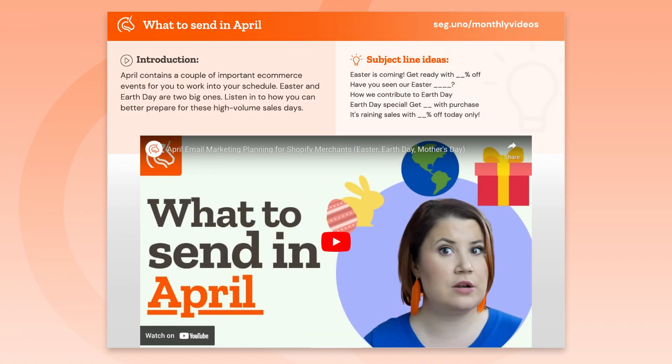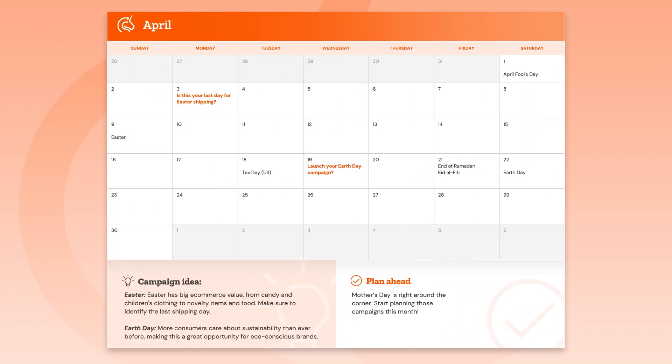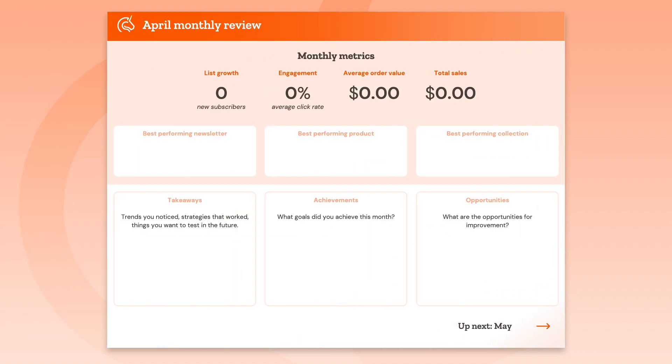The guide follows the same format for each month of the quarter. Each month contains four pages: one, content ideas for what to send; two, a newsletter idea; three, the calendar; and four, a monthly metrics review.